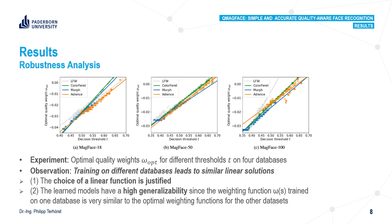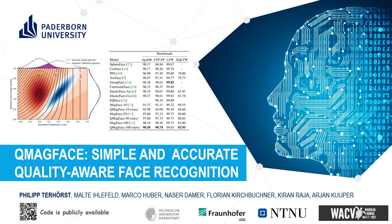We also took a look at the robustness itself. What we do here is compute the optimal quality weights for different thresholds on different databases, and what we observe is that training on different databases leads to similar linear solutions. This means first that our choice of a linear function is justified, and on the other side, the learned models have high generalizability since the weighting functions trained on one database are very similar to the optimal weighting functions for the others. Thank you very much for your attention — the code is publicly available.